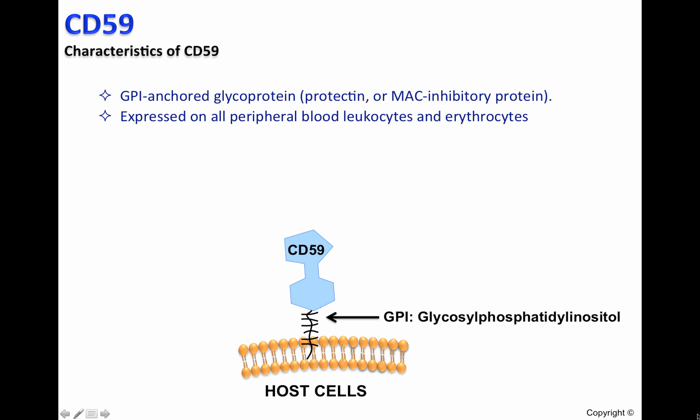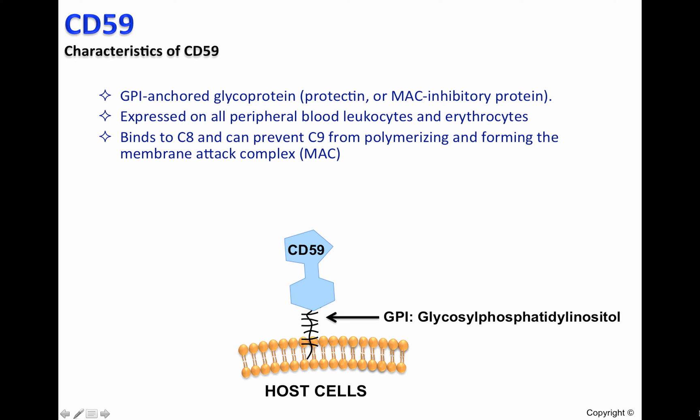CD59 is expressed in all peripheral blood leukocytes and erythrocytes, and binds to C8 and can prevent C9 from polymerizing and forming the membrane attack complex. Basically, CD59 protects host cells from complement-mediated attack.